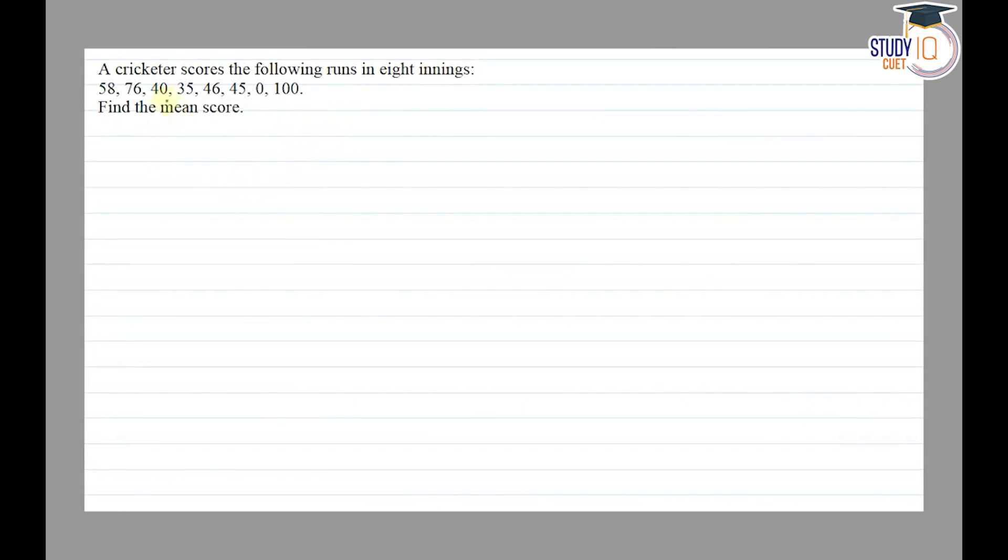The question says that a cricketer scores the following runs in eight innings: 58, 76, 40, 35, 46, 45, 0, and 100. Find the mean score. So we have the formula for mean.